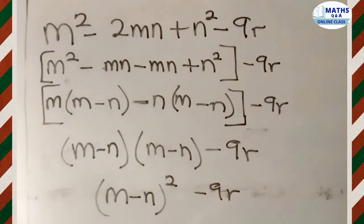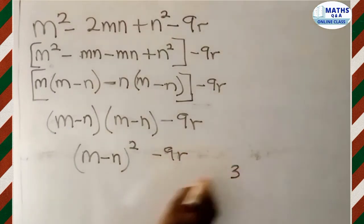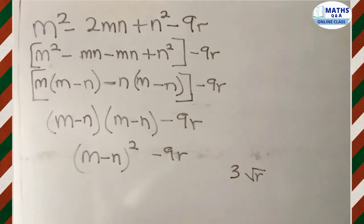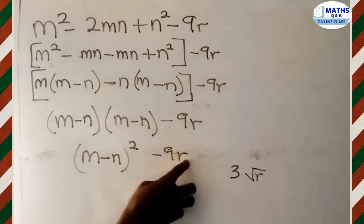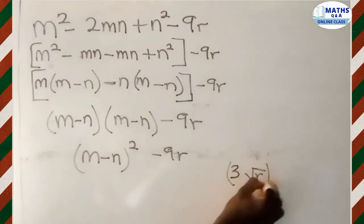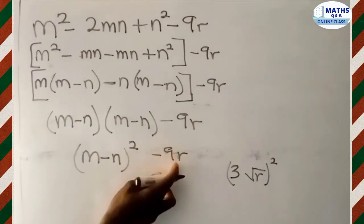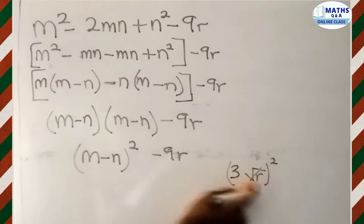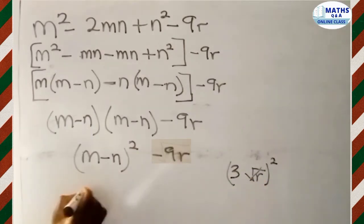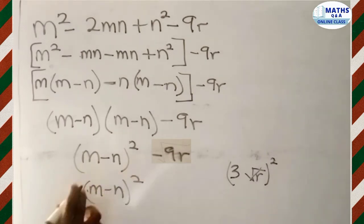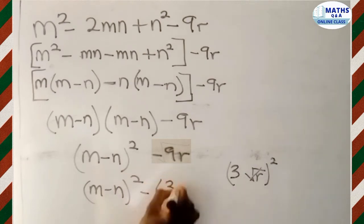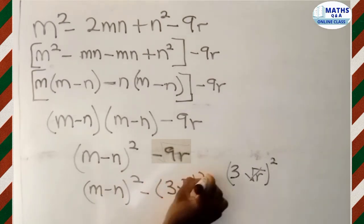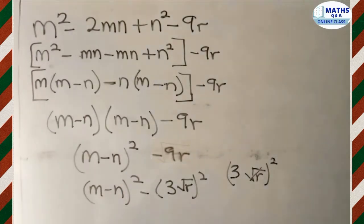Now we tackle the 9R term. Nine is a perfect square, so we can find its square root, which is 3. And since R is not R squared, we write the square root of R as root R. So 3 squared gives 9, and (root R) squared gives R. Therefore we can write 9R as (3 root R) squared, and our expression becomes (M minus N) squared minus (3 root R) squared.